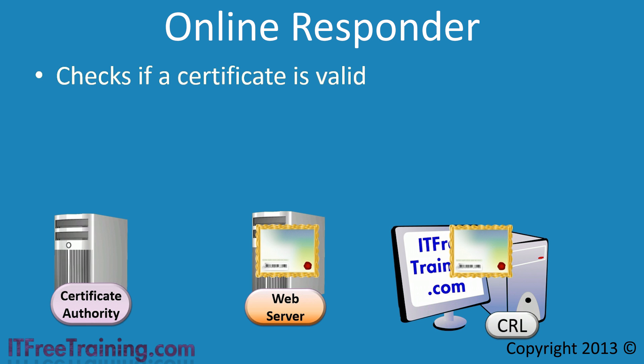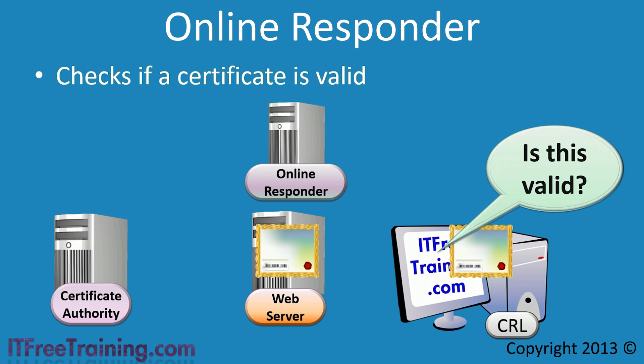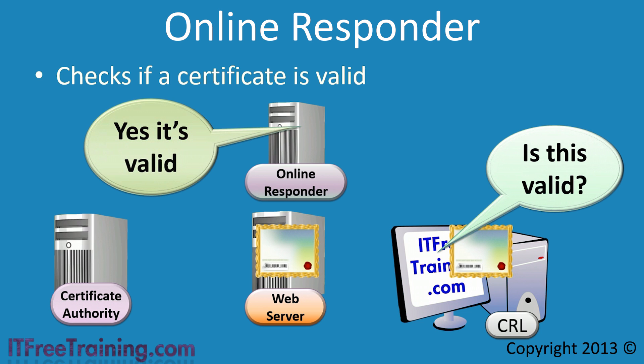The CRL needs to be downloaded to any location that needs to check whether a certificate is valid. There are two problems with this approach. First, the CRL must contain a list of all revoked certificates, and if there are a lot, this list can become quite large. Second, the client will need access to the certificate authority in order to obtain the CRL, which in some cases may not be ideal. This is where the online responder can be used. Rather than the client keeping a list of revoked certificates, it simply asks the online responder if the certificate is valid. The online responder has a connection back to the certificate authority and can download the CRL, meaning the client does not need a direct connection back to the CA.